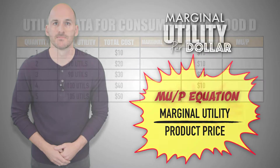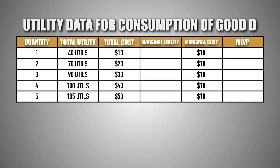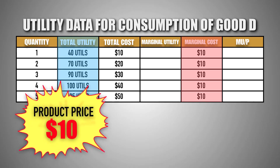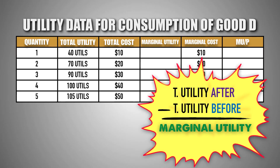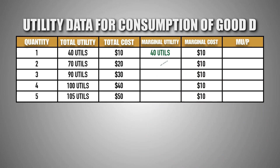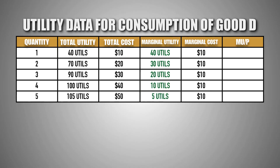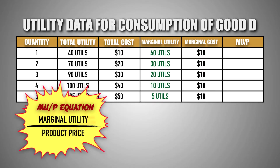Let's practice. Provided is the utility data for a typical consumer in the market for good D. We can see the total utility of the consumer after consuming each unit of good D, as well as the marginal cost of consuming each unit. Assume that the marginal cost of each unit is equal to the market price per unit of good D and there are no other implicit costs. To determine the marginal utility gained with the consumption of each unit, we simply analyze the total utility before and after each unit — the difference gives us the marginal utility for each unit of good D.